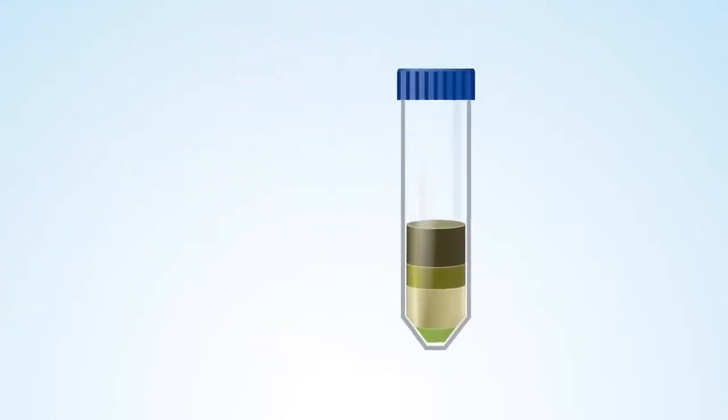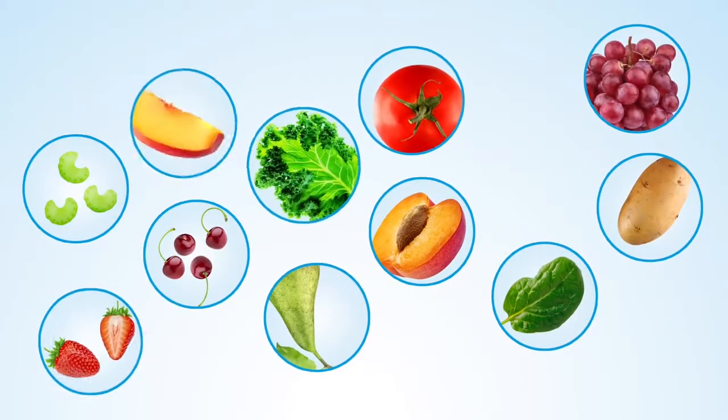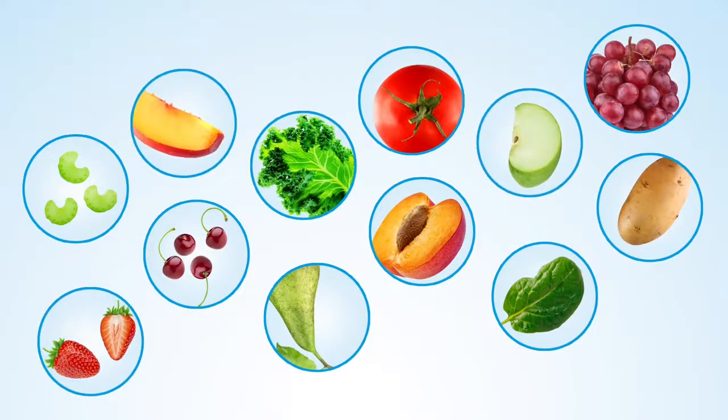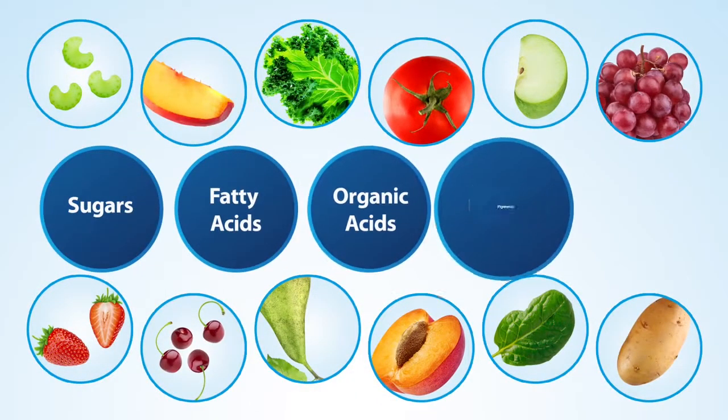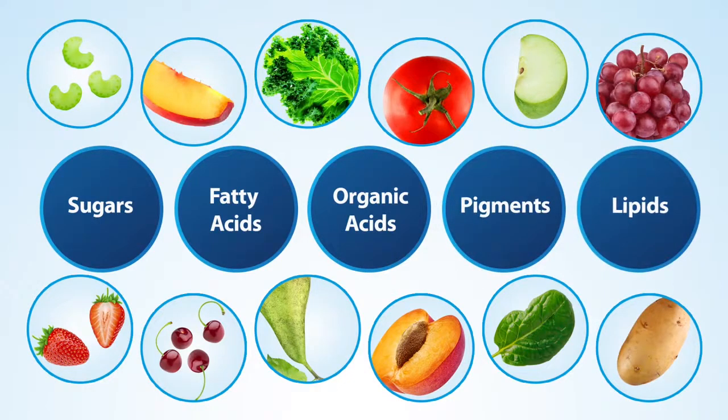You should see four distinct layers. From the top down, there's the supernatant, the sample solids, water, and excess extraction salt. During the extraction of your commodity in Stage 1, other potential interferences such as sugars, fatty acids, organic acids, pigments, and lipids may still be present.